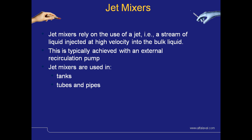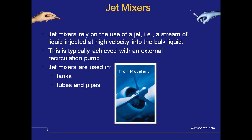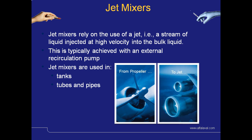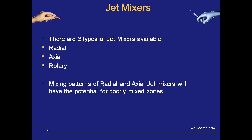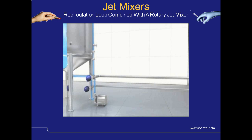The last of the trilogy of mixing technologies we are going to look at is jet mixers. These rely on the use of a jet or stream of liquid injected at high velocity into the bulk liquid, typically achieved with an external recirculation pump. Jet mixers are used in tanks, tubes and pipes, and by some are seen as an advancement on standard propeller agitators. There are three types of jet mixers available: radial, axial and rotary. Rotary is perceived to be the best technology, as the mixing patterns of radial and axial jet mixers sometimes have the potential for poorly mixed zones. This small video shows how the isomix can be used in a recirculation loop.